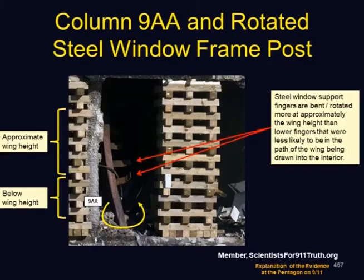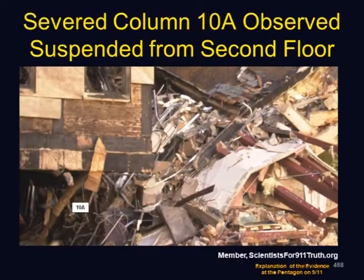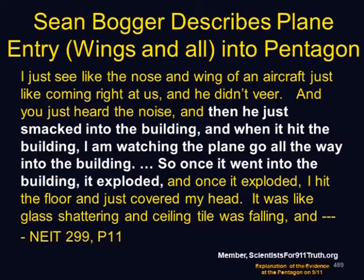Column 9AA is shown to be rotated more at the height of the wing impact than below — a reasonable estimate of what actually happened. Column 10A is hanging from the top with concrete stripped off the lower half, indicating other forces in this area. Sean Boger, who was in the control tower, describes the plane entry: 'I just see like the nose and the wing of an aircraft just like coming right at us, and he didn't veer. He just smacked into the building, and I'm watching the plane go all the way into the building. Once it went into the building it exploded, and I hit the floor and covered my head — glass shattering and ceiling tiles falling.' — Center for Military History.